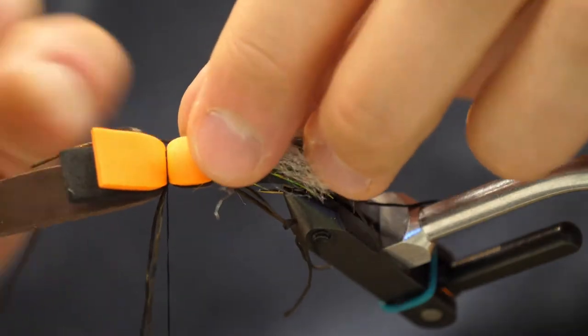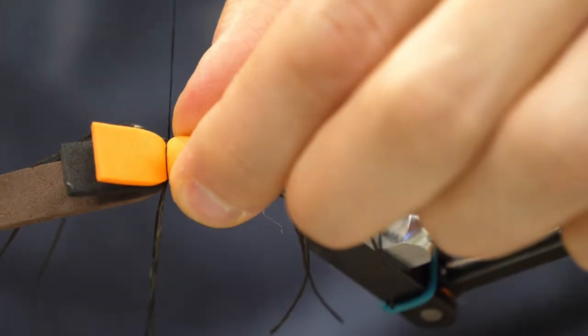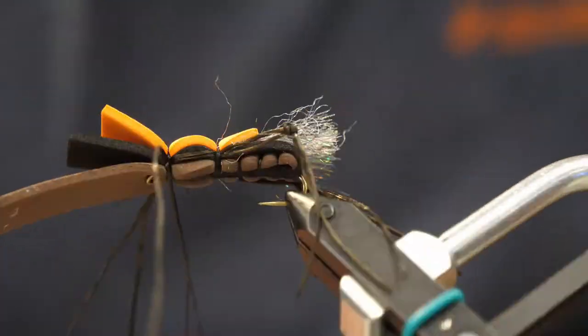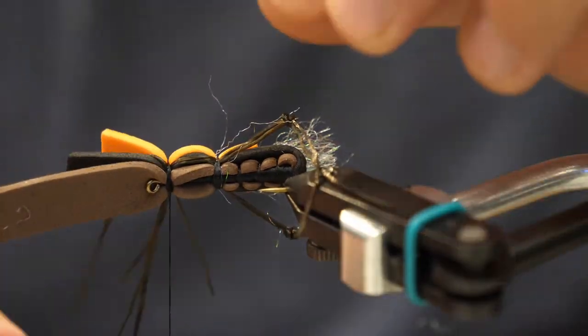Now I'm going to splay those out. Now I'm going to take two more sections of rubber leg and just do a classic tie, like a V pattern here. We want to have a lot of rubber legs. It gives this fly a buggy appearance and a lot of movement.